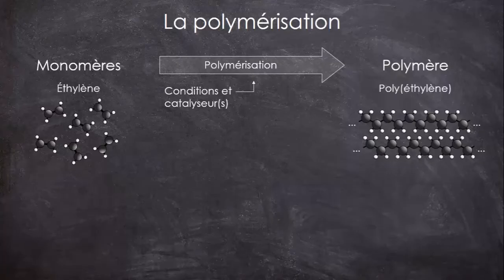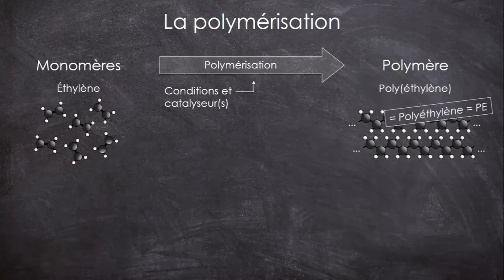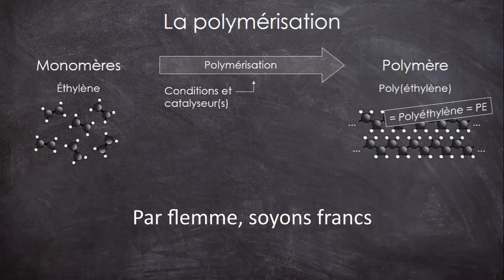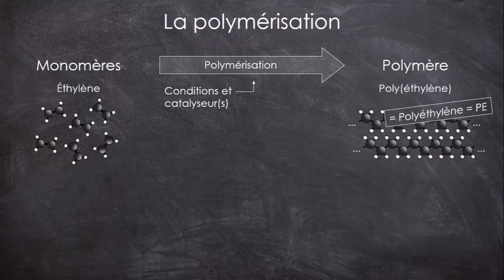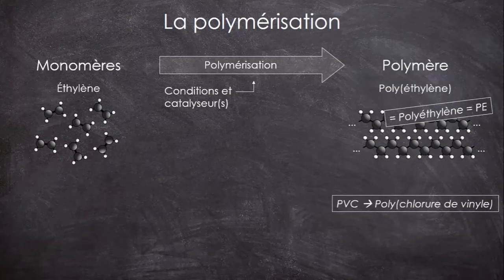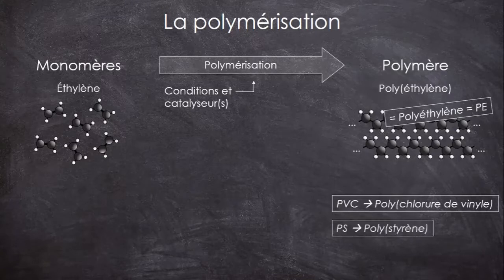Attention, tous les polymères ne sont pas nommés en « poly quelque chose », comme l'ABS ou le caoutchouc par exemple. Normalement on se doit de mettre les parenthèses pour le nom, mais il est très fréquent qu'on ne les mette pas. On utilise parfois aussi un acronyme, comme PE pour le polyéthylène, PVC pour le polychlorure de vinyle, ou PS pour le polystyrène.